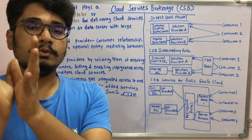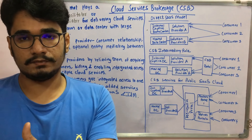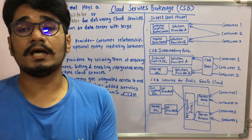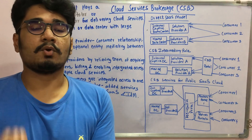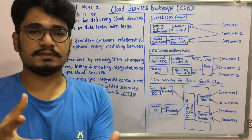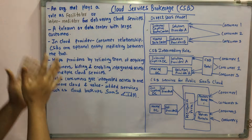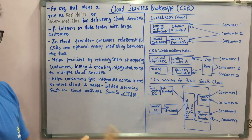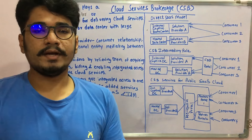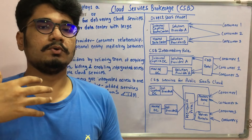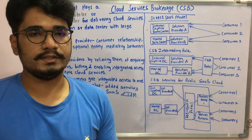A CSB can be either a telecom or a data center with a large number of customers. You can relate this to mobile carriers like AT&T or Vodafone, which have billions of customers. That kind of telecom provider or data center with so many large customers can be your CSB — a brokerage which provides certain services for a rental fee.